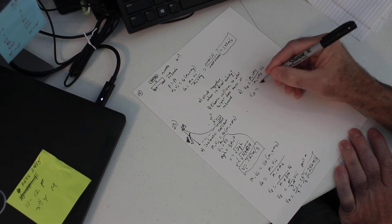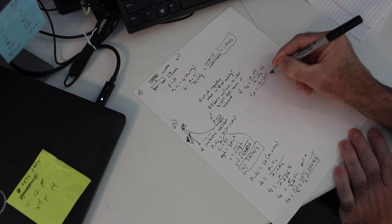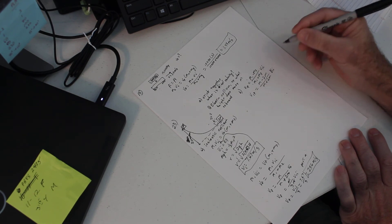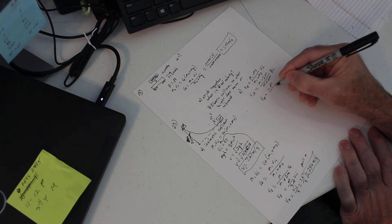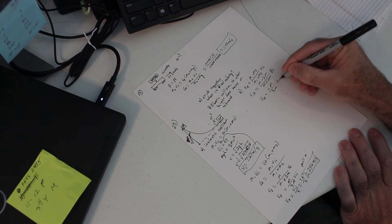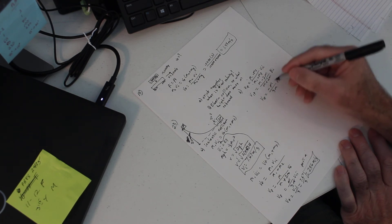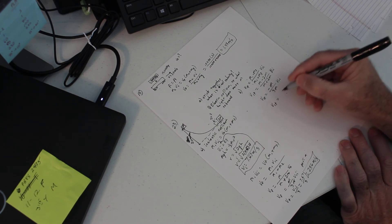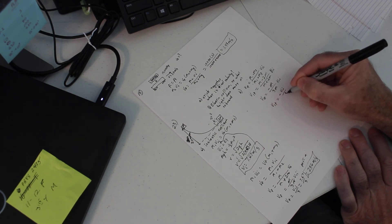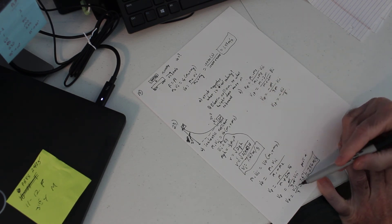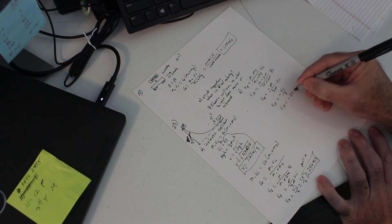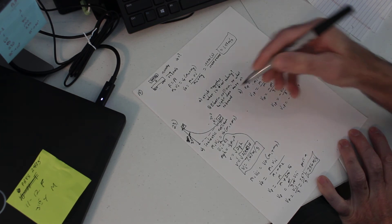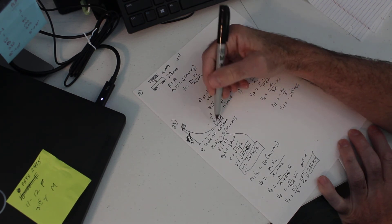M1 minus M2 is M minus 2M over M plus 2M times V1_initial. M minus 2M is just negative M over 3M times V1_initial. The M's cancel, so V1_final equals negative V1_initial over 3 — the same magnitude as part A but negative. That gives negative 2.56 meters per second, so it hits and bounces back at 2.56 meters per second.